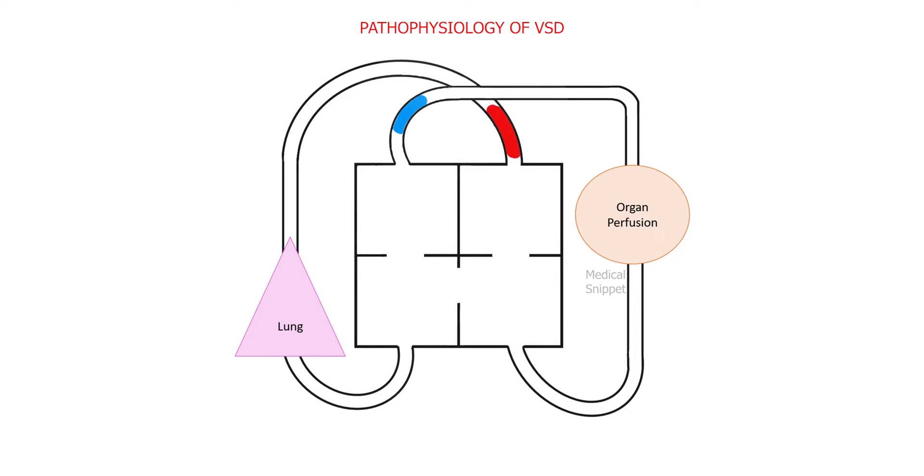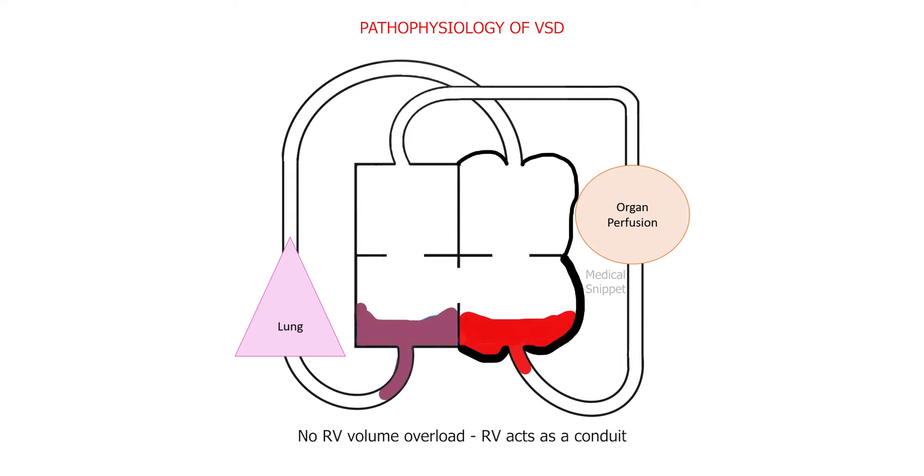This increased blood flow in turn reaches the left atrium and then to the left ventricle. So there is left atrial and left ventricular volume overloaded state. So slowly the left atrium enlarges and the left ventricular dilatation and hypertrophy occurs. There is no right ventricular volume overload,